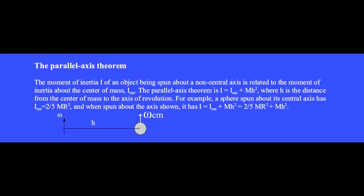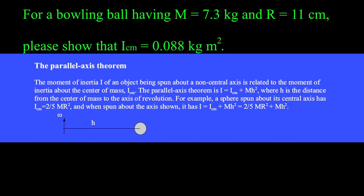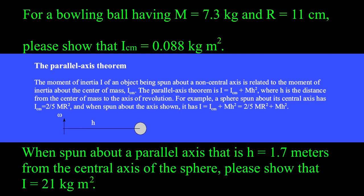When this sphere spins about its center, its moment of inertia is I equals 2 fifths mr squared. When the sphere instead spins about a parallel axis that is the distance h from the center of the sphere, the moment of inertia is found using the parallel axis theorem: I equals the moment of inertia about the center of mass plus m times h squared. For a bowling ball having mass 7.3 kg and radius 11 cm, show that the moment of inertia when spun about its center is 0.088 kg m squared. When spun about a parallel axis h equal 1.7 m from the central axis, show that I equals 21 kg m squared.